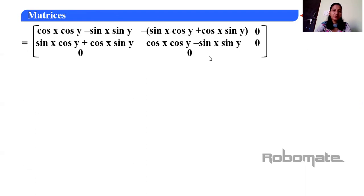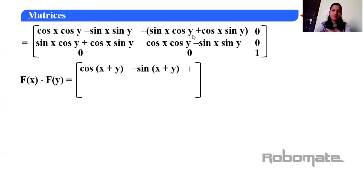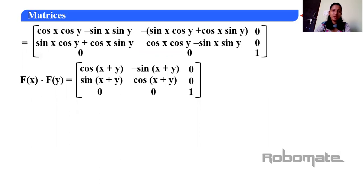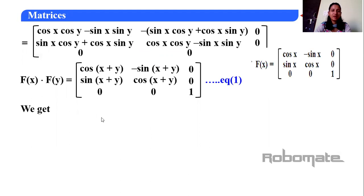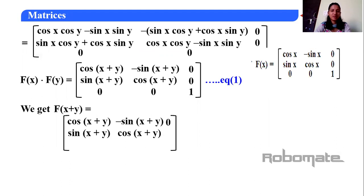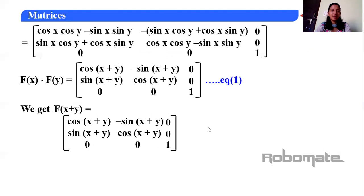Using these formulas, the resultant matrix equals [cos(x+y), −sin(x+y), 0; sin(x+y), cos(x+y), 0; 0, 0, 1]. You can see that x is replaced by x+y, so this is exactly f(x+y). Comparing with the given f(x), LHS equals RHS, hence verified.